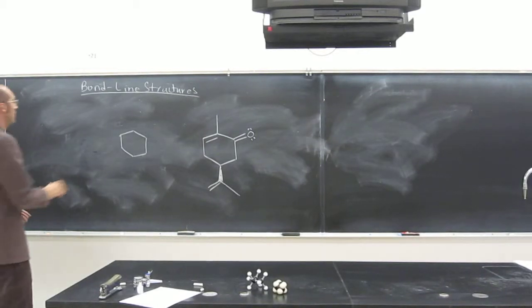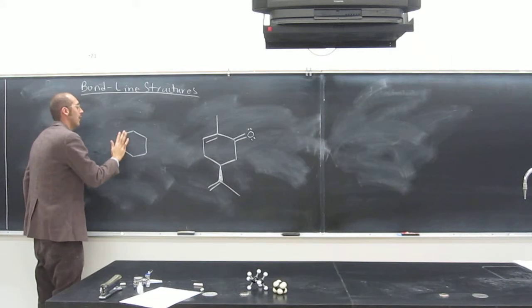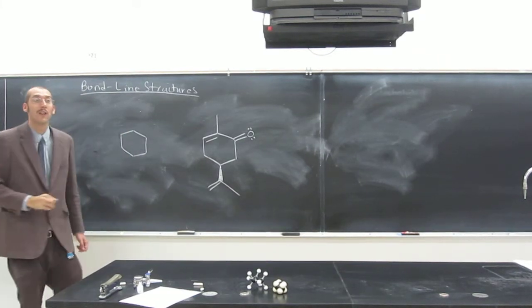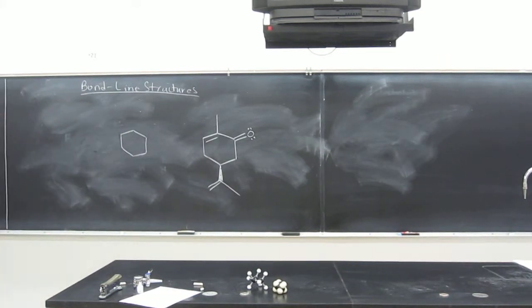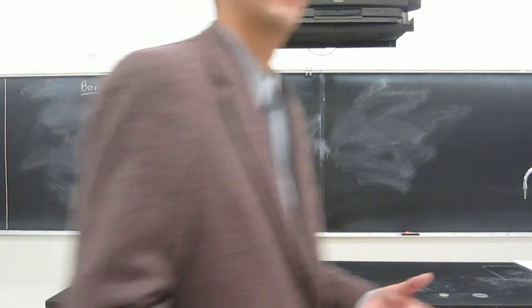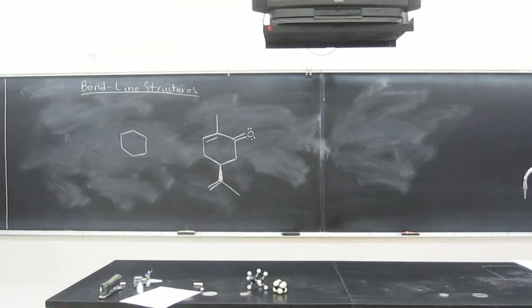So remember bond line structures, these are even more condensed than condensed structures, but they also show the bond angle information, where the condensed structures don't. But there's a lot of implied stuff with these bond line structures.